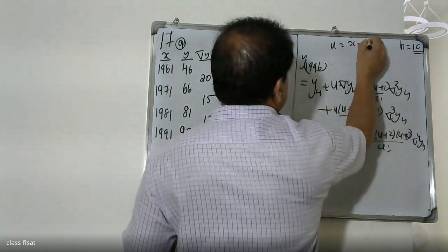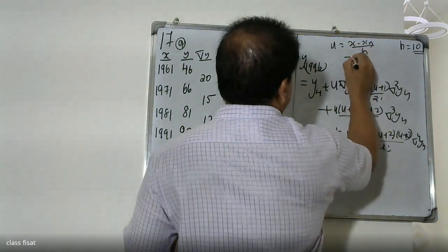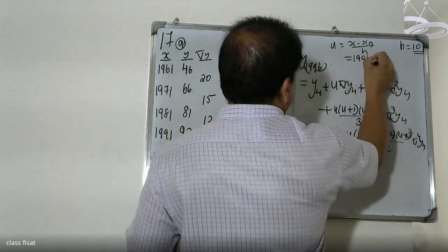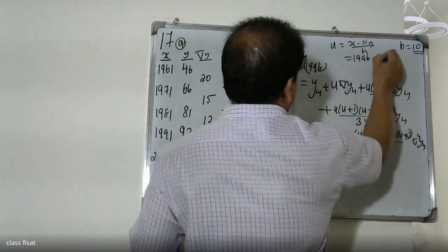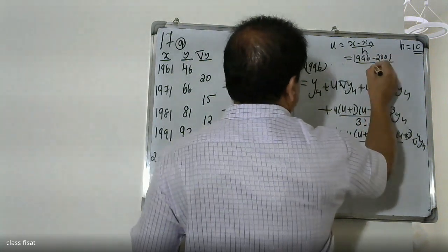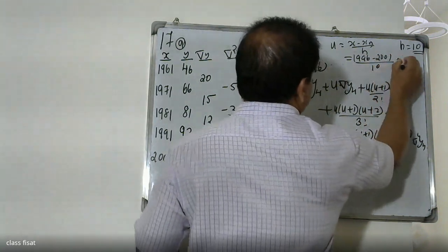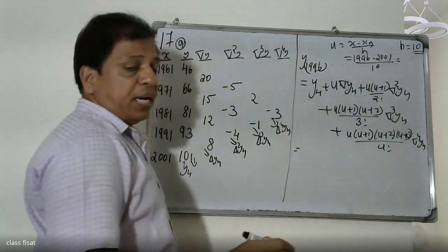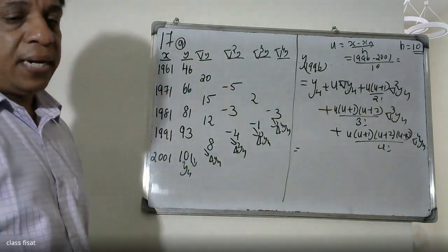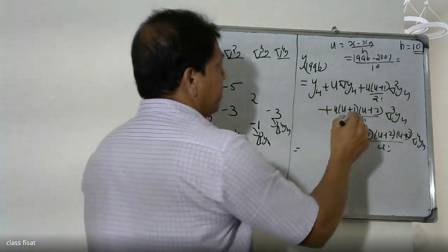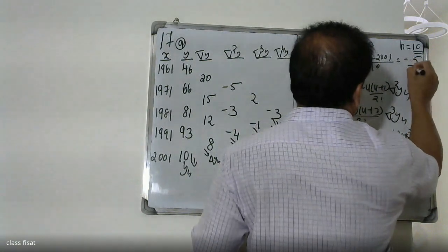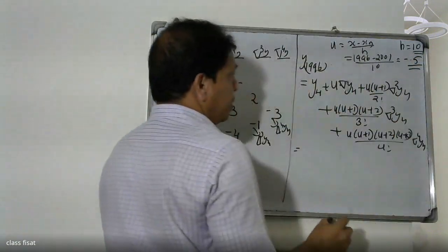The value of u is calculated as (x - xₙ)/h = (1996 - 2001)/10 = -5/10 = -0.5.